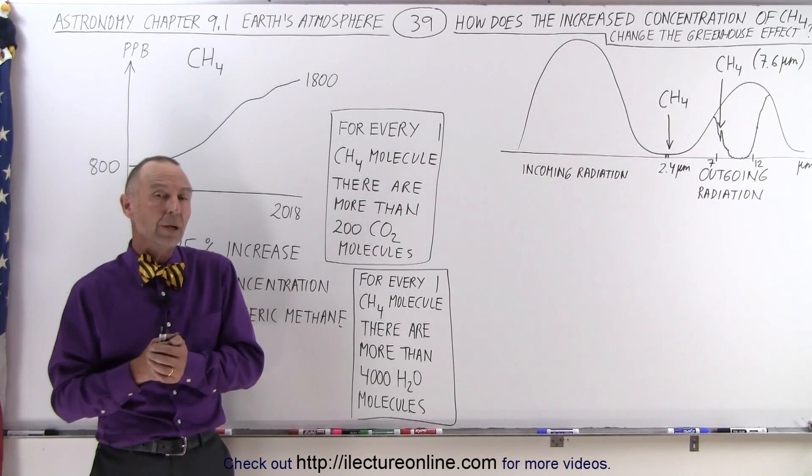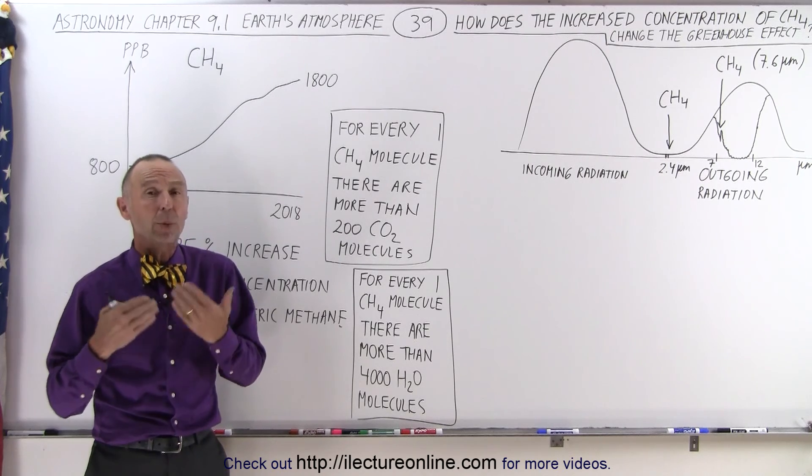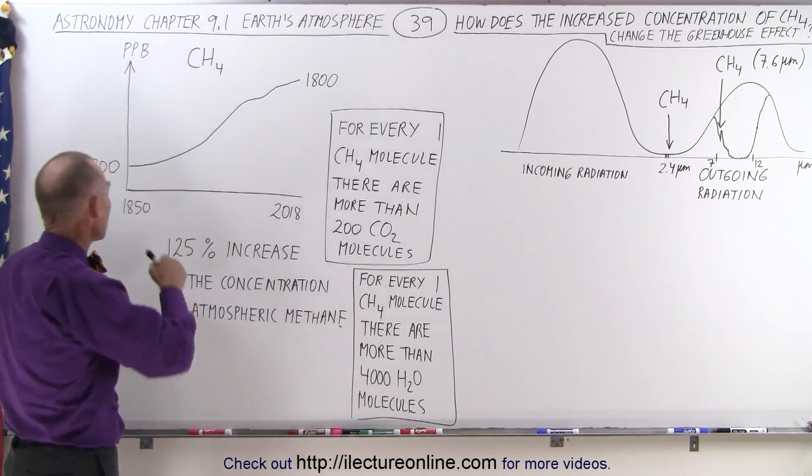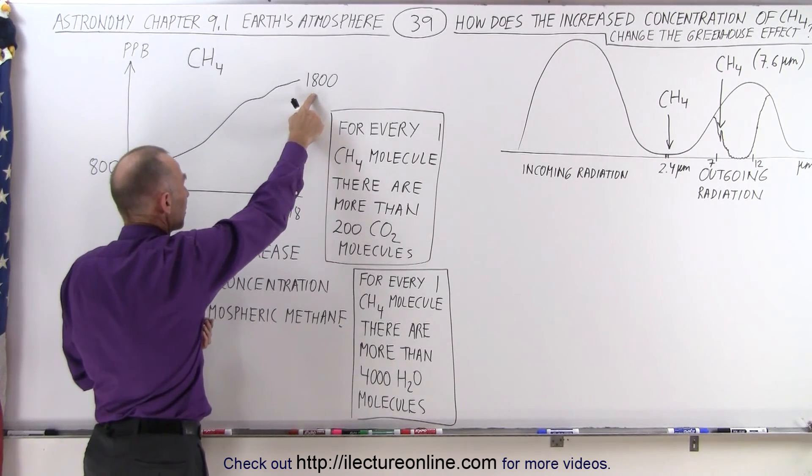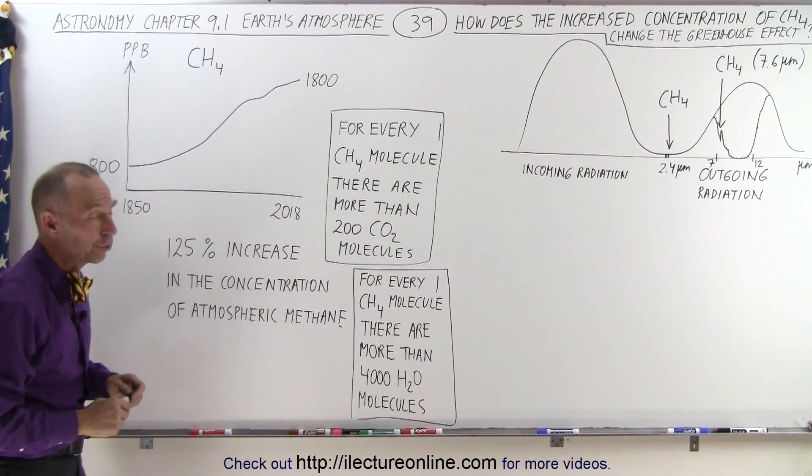Welcome to our lecture online. We know that methane has been increasing in our atmosphere for quite a while now. The atmospheric concentration of methane has increased from about 800 parts per billion to about 1800 parts per billion between the beginning of the Industrial Revolution and where we are today.